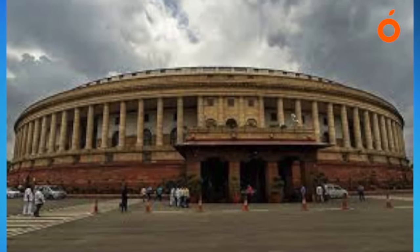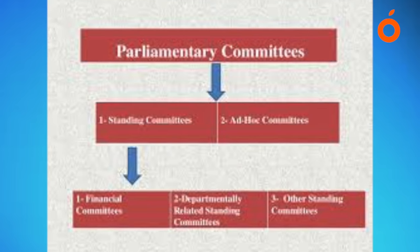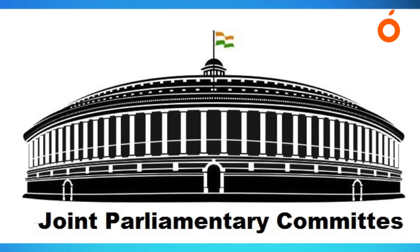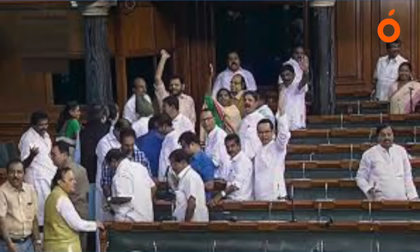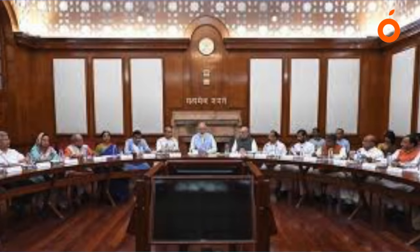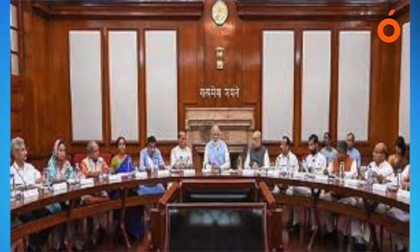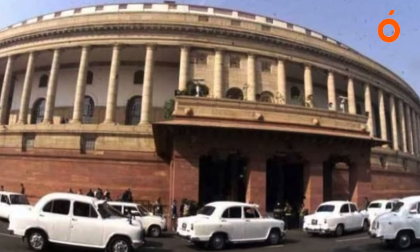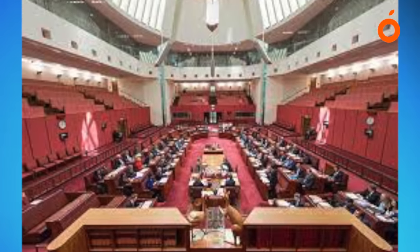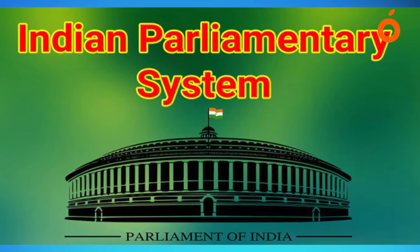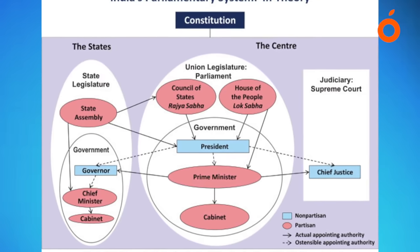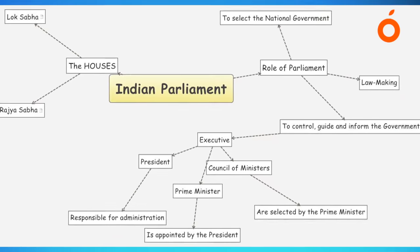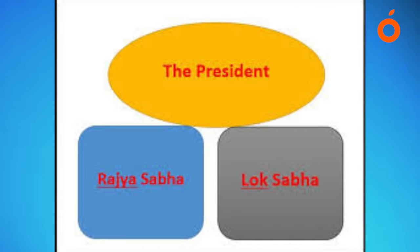Apart from the department-related standing committees in which both Lok Sabha and Rajya Sabha participate, Rajya Sabha has some exclusive committees. These are the Committee on Subordinate Legislation, Committee on Government Assurances, Committee on Papers Laid on the Table, Rules Committee, House Committee, and General Purposes Committee. The Committee on Subordinate Legislation scrutinizes each rule, regulation, and by-law framed in pursuance of the Constitution or legislative functions delegated by Parliament to a subordinate authority, which is required to be laid before Parliament. The committee consists of 15 members nominated by the Chairman.